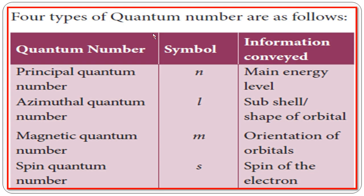There are four different types of quantum numbers. The first one is the principal quantum number, denoted by the symbol N, which conveys information about main energy levels; N equals 1, 2, 3, 4. The second one is the azimuthal quantum number, denoted by the symbol L, which gives information about sub-shells: S, P, D, F — also called the shape of the sub-shell. The third one is the magnetic quantum number, denoted by the symbol M, which gives orientation of the different orbitals. The fourth one is the spin quantum number, denoted by the symbol S, which describes the spin of the electrons.